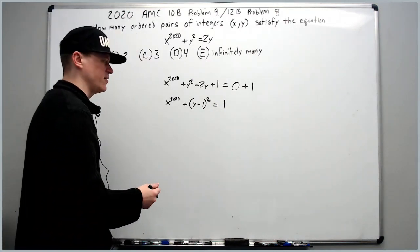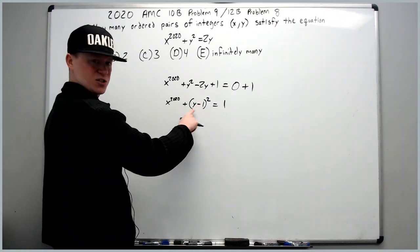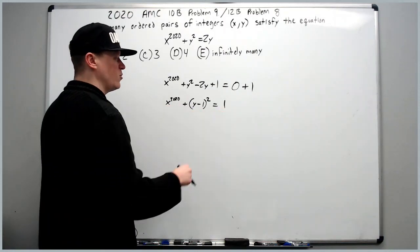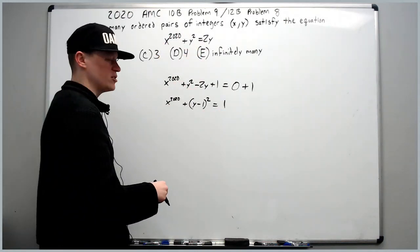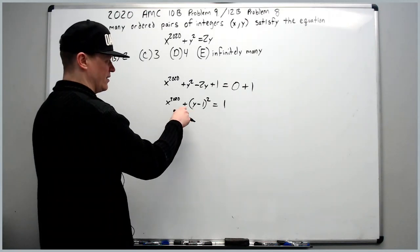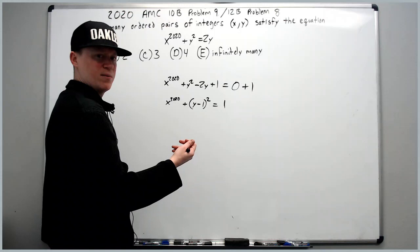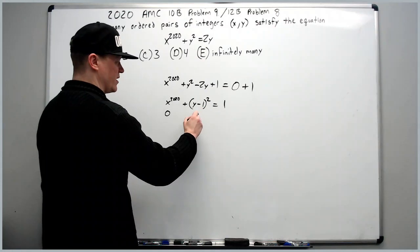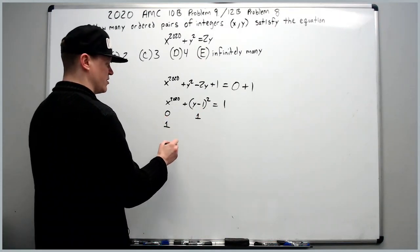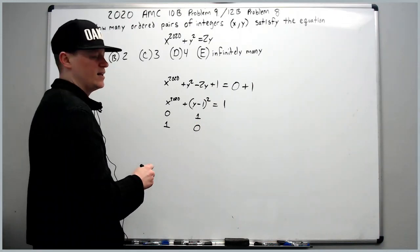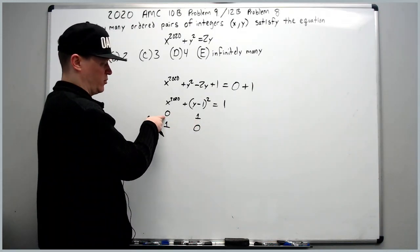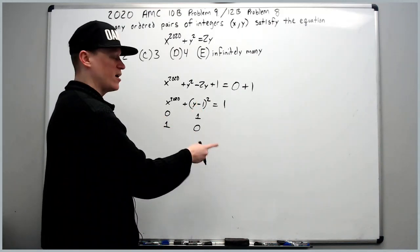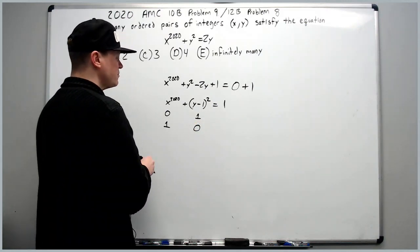From here, it's simply a matter of thinking. This is obviously a perfect square, whatever this is, but so is this. So really, this is a square plus a square equals 1. And since x and y need to be integers, we know that these expressions are integers as well, and so is y minus 1. That means my possibilities for x to the 2020 are zero and y minus 1 is one, or x to the 2020 is one and y minus 1 is zero. Now, be careful, we're not saying x is zero, y is one. Well, in this case, x is zero, but we're not saying that y is one exactly. We're saying the expression y minus 1 squared has to come out to be one.